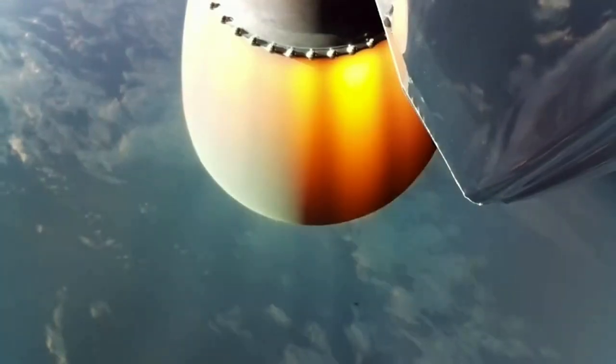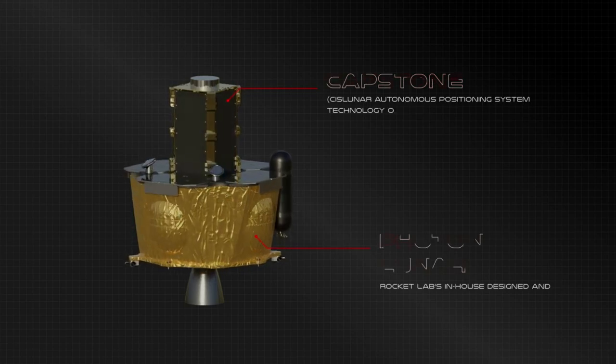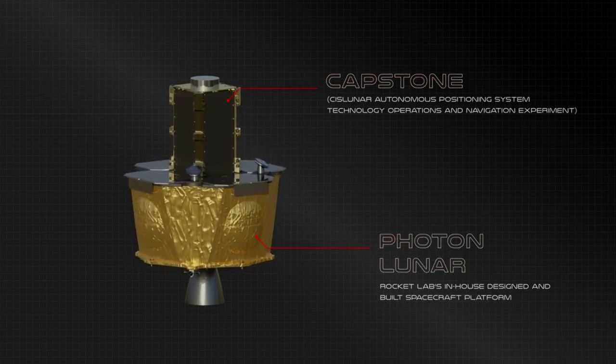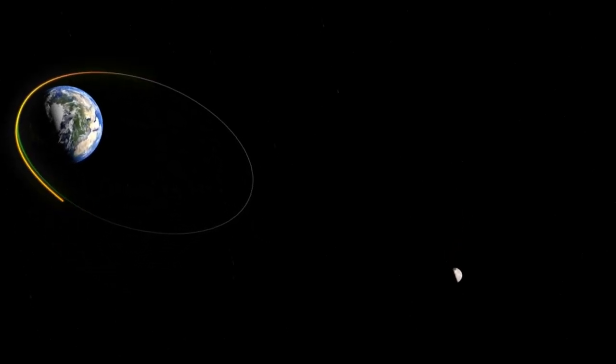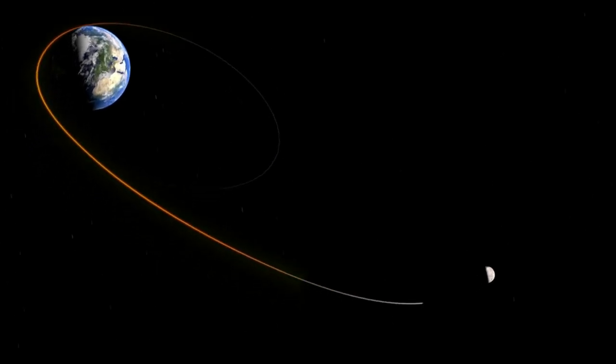The long journey begins with a Rocket Lab Electron launch. Electron will first launch Capstone to an initial low-Earth orbit. From here Rocket Lab's Photon spacecraft takes over and performs multiple orbit-raising maneuvers. Photon is an integrated launch and satellite solution. Photon flies as the upper stage of Electron, eliminating the parasitic mass of deployed spacecraft and enabling full utilization of the fairing.